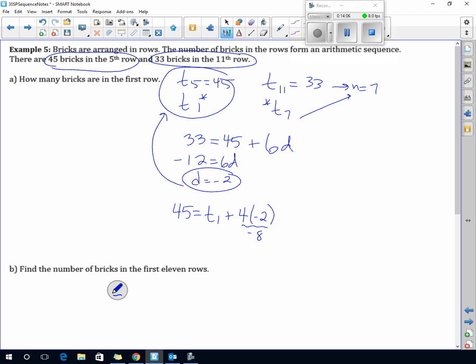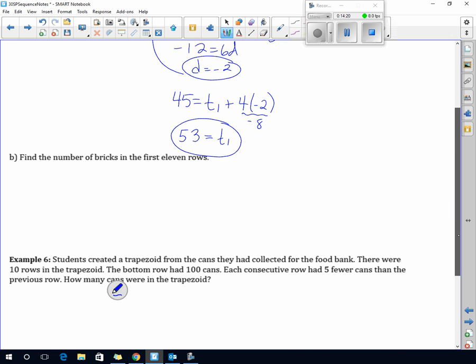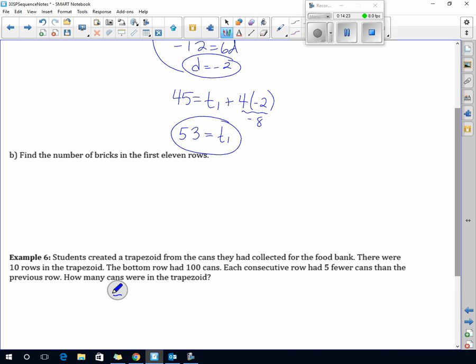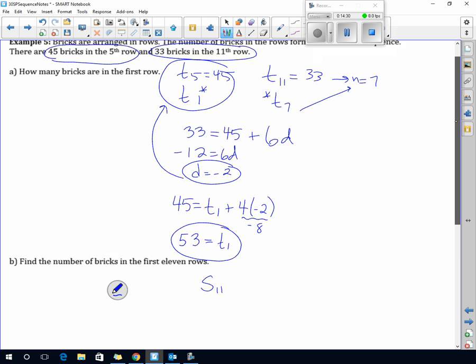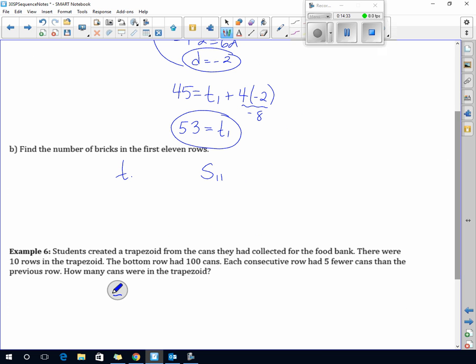Find the number of bricks in the first 11 rows. That means we are finding the sum of 11. Do we know what the 11th term is? Yes, we do. We know it's 33. So term 11 is 33, term 1 is 53, and my common difference is negative 2. Although we don't need to know the common difference if we use the second formula. So that is going to be 11 divided by 2, 53 plus 33. 53 and 33 is 86, 86 divided by 2 is 43, 43 times 11 is 473 bricks.